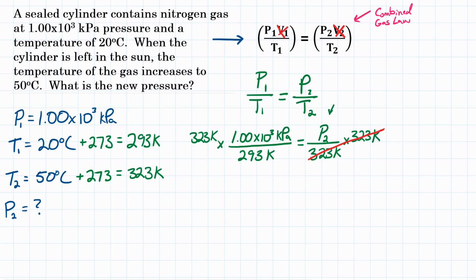Now let's look at our units. On the left side, we have Kelvin on top and we have Kelvin on bottom. Those are going to cancel. And we're going to be left with kPa as our units in the end. And now we can do the math. You're going to put in your calculator 323 times 1.00 times 10 to the third. And then we're going to divide by what's on the bottom, which is 293. Hit equals.